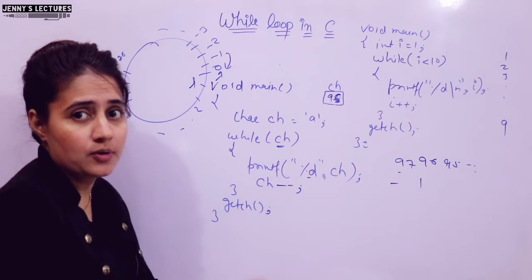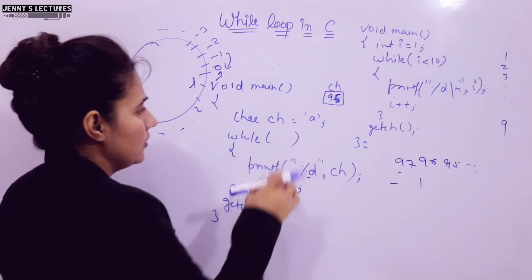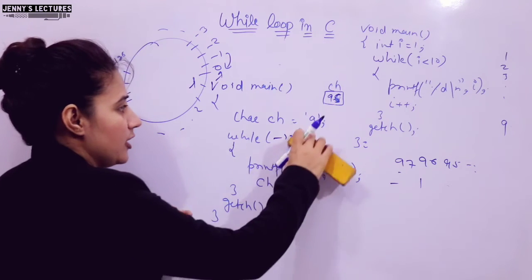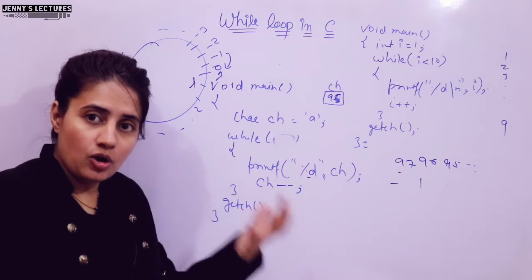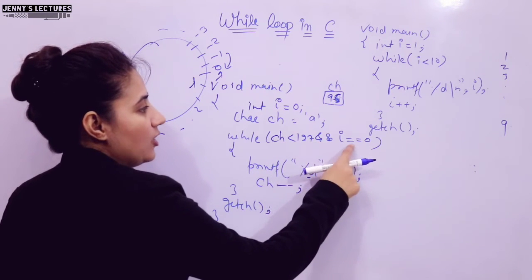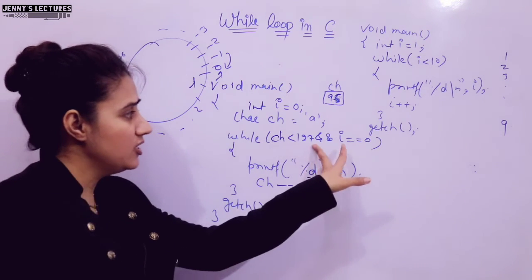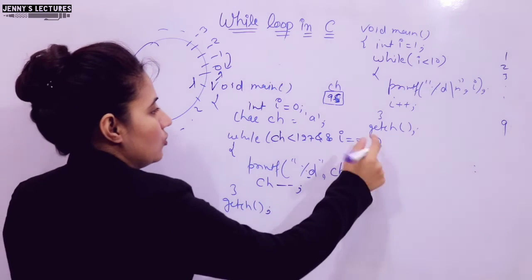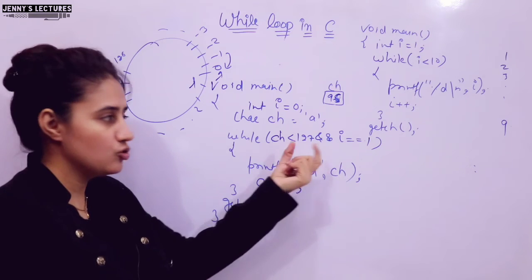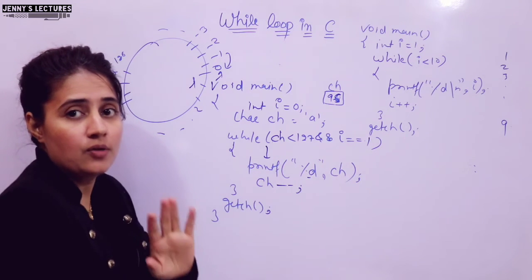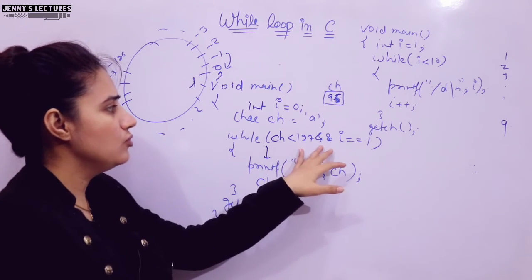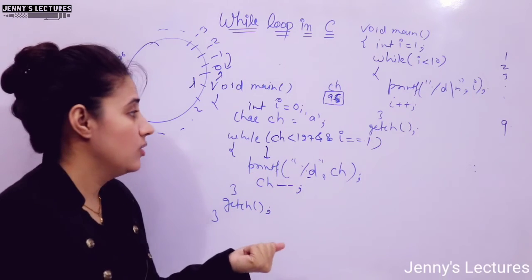Note: after `getch()` you have to use a semicolon. You can also write constant values like -11, 11, 0, or 1 in the condition. You can use relational operators and logical operators — for example, `while(ch < 127 && i == 0)`. If `i` is 0 but you check `i == 1`, that condition is always false, so the loop body never executes even once. You can combine two or more conditions using logical connectors.